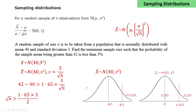Rearranging this inequality gives us that n must be greater than 6.13. And as the sample size must be a whole number, n must be greater than or equal to 7. So the minimum sample size such that the probability of the sample mean being greater than 42 is less than 5% is 7.